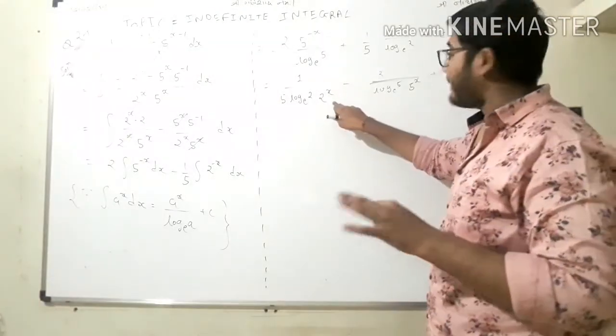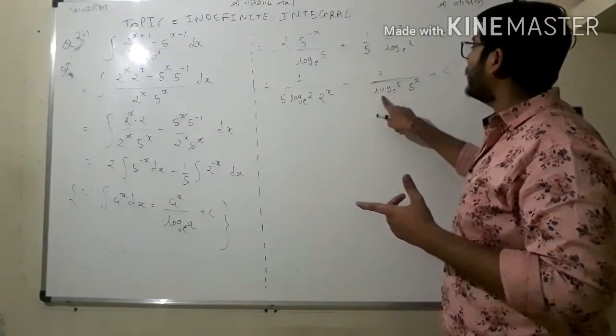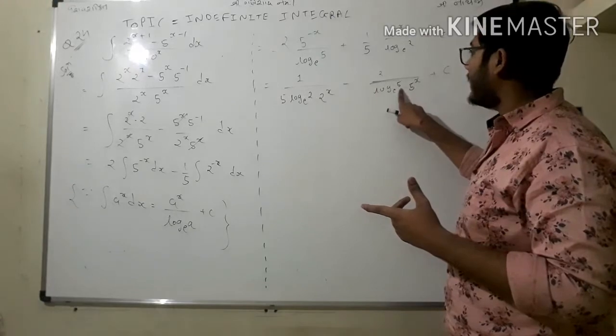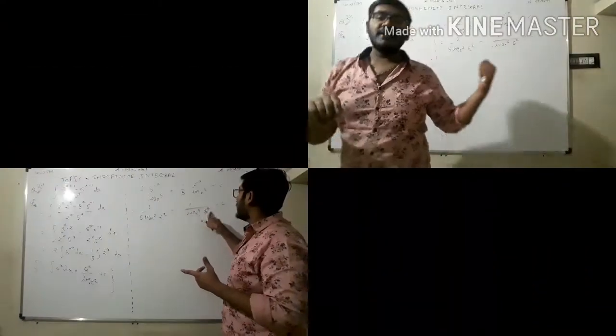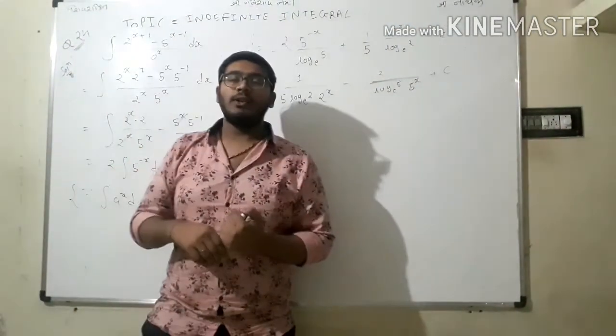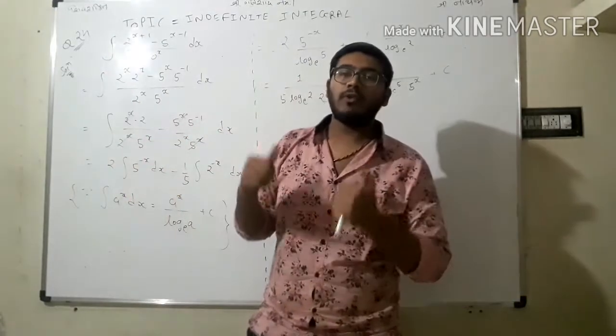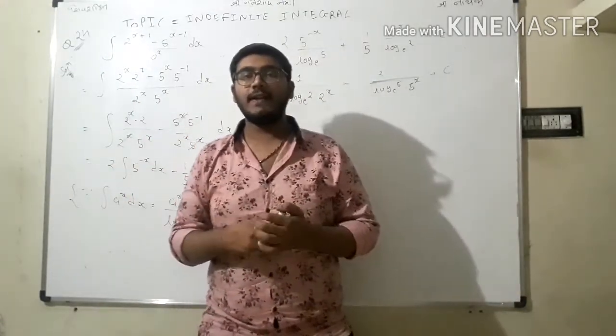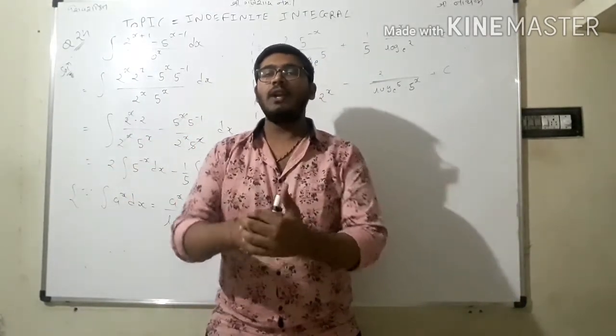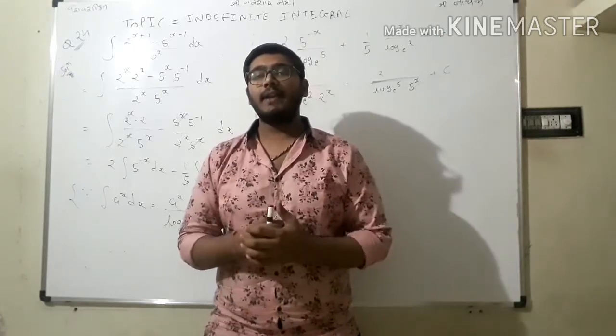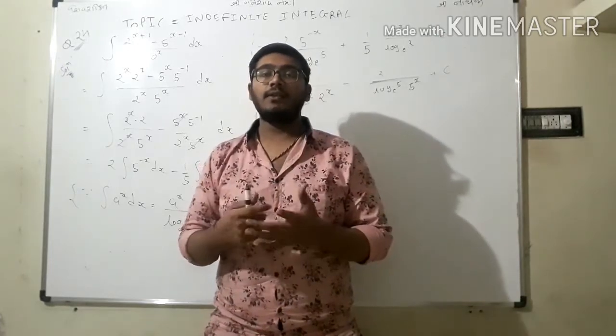Now then after plus term here and minus term here, 1 upon 5 log e base 2, 2 raised to minus x. Then after 2 upon log e base 5, 5 raised to minus x plus c, which is our required solution.